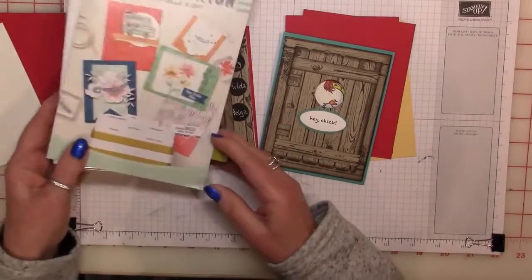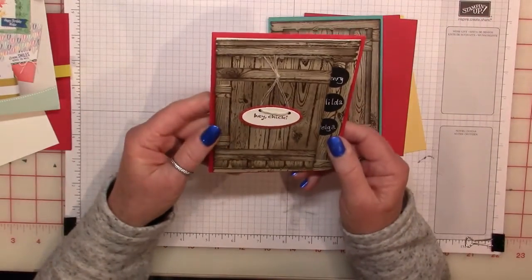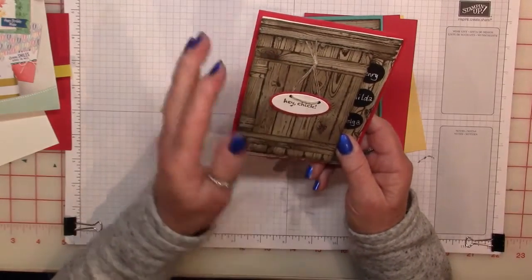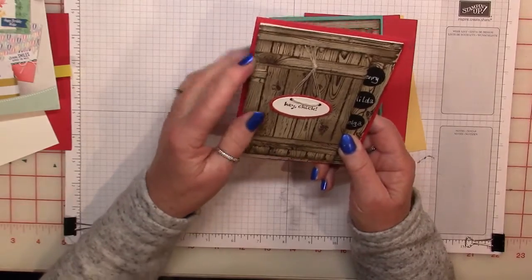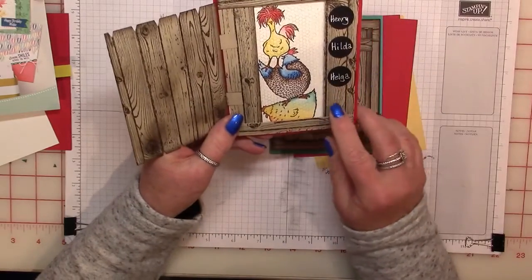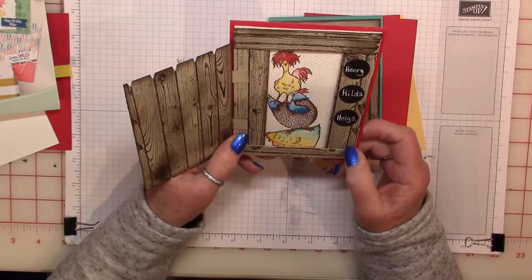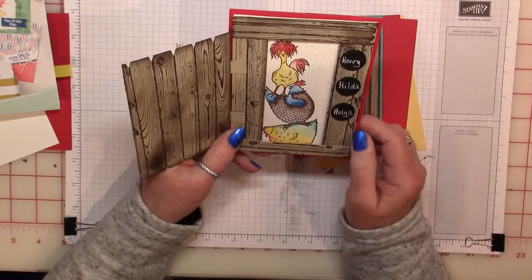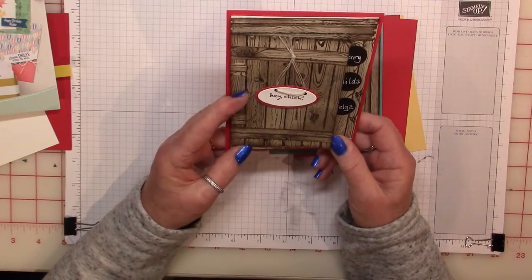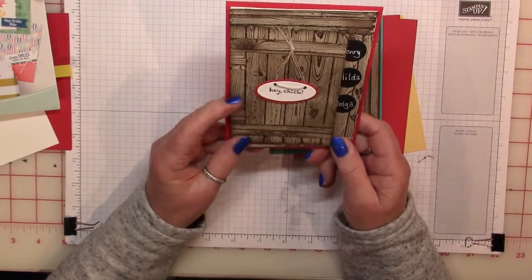So for the project today, we're going to make one of these cards. This first card is actually the first one that I made, and I put the door on incorrectly. The door is supposed to be more centered on the card, and I ended up putting it butting it up on the left-hand side. So I decided to put some little names on there for the two chickens and the rooster: Henry, Hilda, and Helga. I have some friends that live down in Washington State, and they have chickens, and they've got the names of their chickens on the door. So I thought that was quite cute.